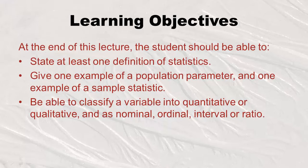Here are our learning objectives for this lecture. At the end of this lecture, the student should be able to state at least one definition of statistics — yes, there's more than one — give one example of a population parameter and one example of a sample statistic. Also, the student should be able to classify a variable into quantitative or qualitative, and as nominal, ordinal, interval, or ratio.